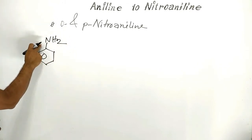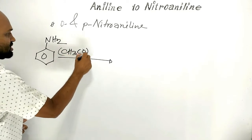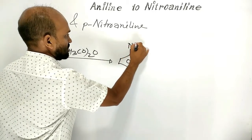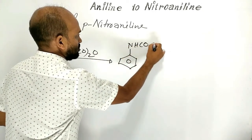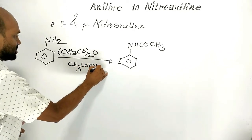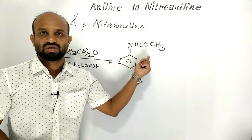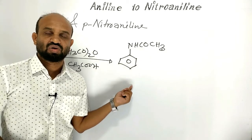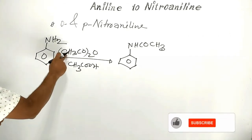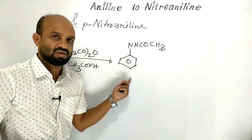Aniline is treated with acetic anhydride to produce acetanilide — where the amino group changes to NHCOCH3. Acetic acid is formed as a byproduct. The amino group is acetylated with acetic anhydride, giving acetanilide.